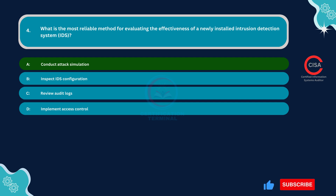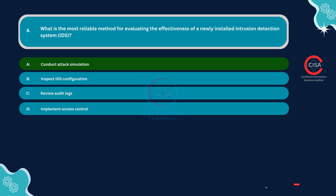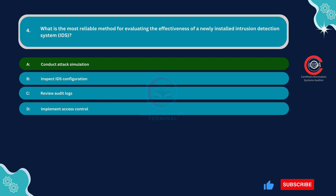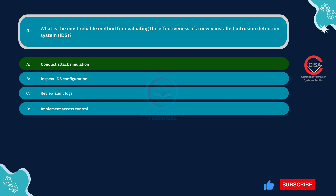Attack simulation also helps validate the configurations and tuning parameters of the IDS, allowing organizations to identify any misconfigurations or gaps in coverage that may impact the system's ability to detect and respond to attacks accurately. By identifying weaknesses through attack simulation, organizations can take proactive measures to strengthen their security posture, mitigate potential risks, and enhance the overall effectiveness of the intrusion detection system.